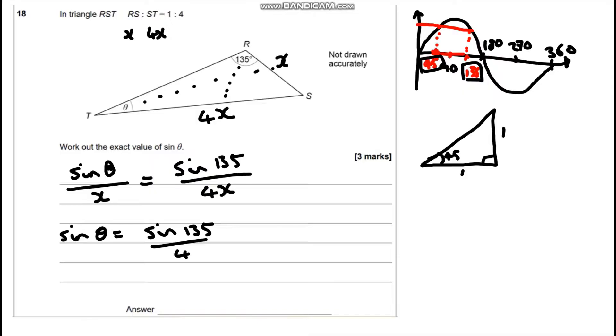So this time, we're going to do Pythagoras's theorem to work out this length here. So we're going to do one squared plus one squared equals the hypotenuse squared. So two equals the hypotenuse squared, so hypotenuse equals root two.